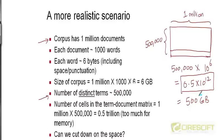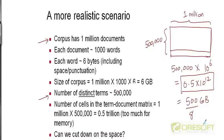Even if we were to store each cell using just one bit, that would still be 500 gigabytes divided by 8, because there are 8 bits in a byte. That would still be quite large compared to the amount of RAM available in a typical laptop or PC today. So we're going to run out of space even with a small corpus of a million news documents.